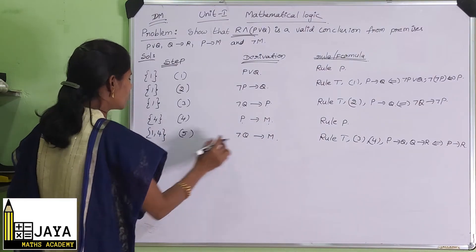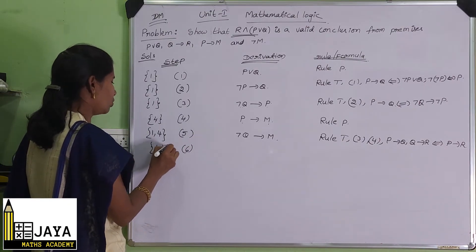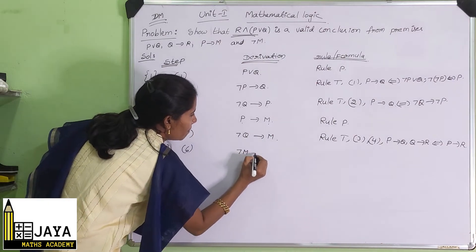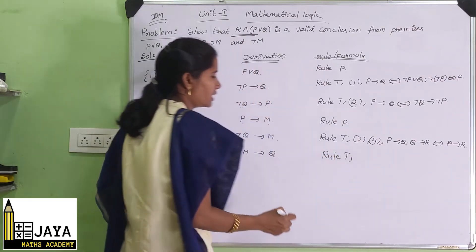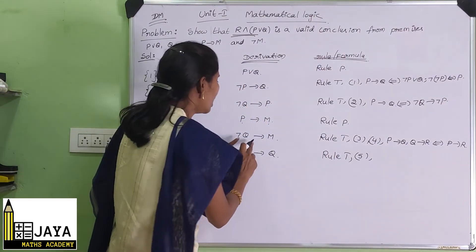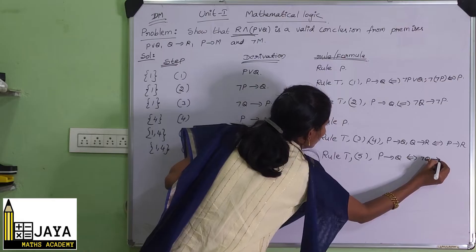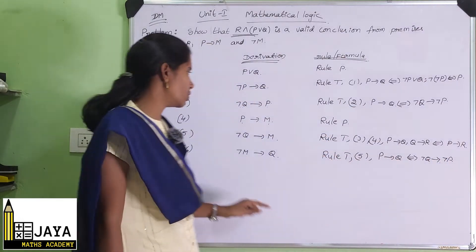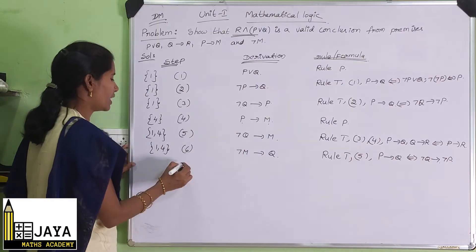So that gives negation Q implies M. We can also write this as negation M implies Q — that is the sixth step. Here negation M implies Q, using rule T for the fifth step. The formula used is: P implies Q is equivalent to negation Q implies negation P, giving negation M implies negation of negation Q, which is Q.